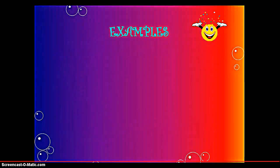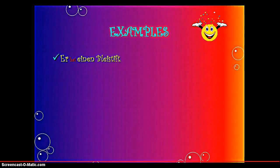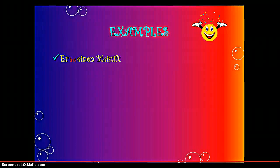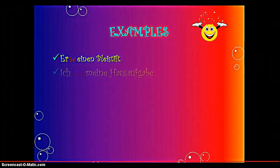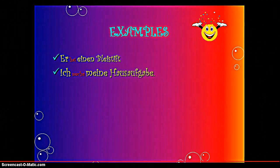Let's have a look at some examples. 'Er hat einen Bleistift.' Er is the Nominative subject because it is before the verb. Hat is the Accusative verb, and einen Bleistift is the object — Bleistift is the direct object, and einen is the Accusative article. 'Ich mache meine Hausaufgabe.' Ich is Nominative, machen is the Accusative verb, and meine Hausaufgabe is the direct object.